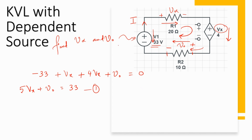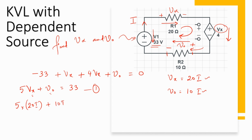Since we need to find Vx and V0, let's express them in terms of i. From Ohm's law: Vx equals 20i and V0 equals 10i. Substituting into the KVL equation: 5 times 20i plus 10i equals 33, which gives 110i equals 33, so i equals 0.3 amps.